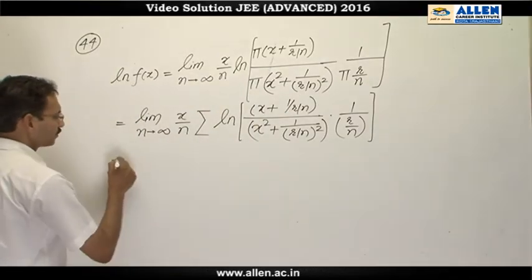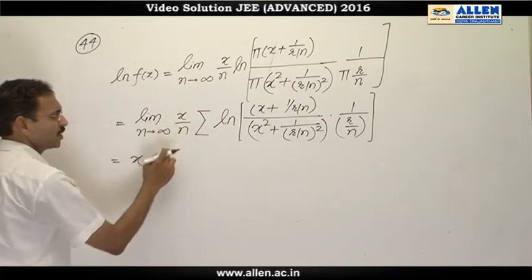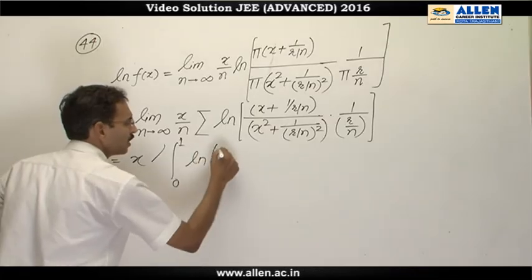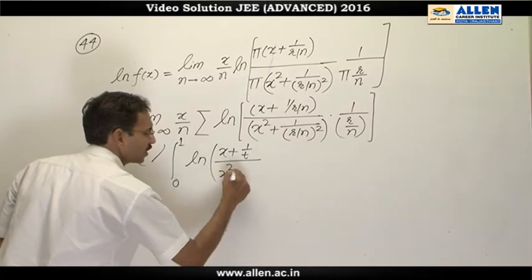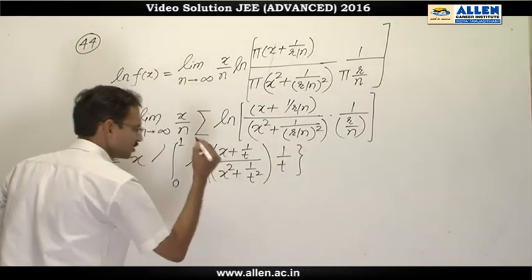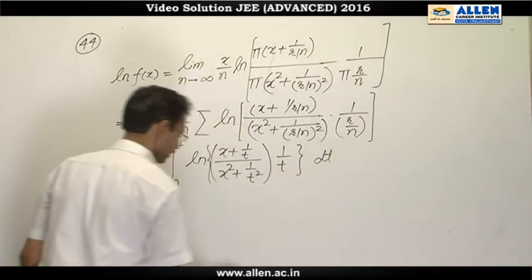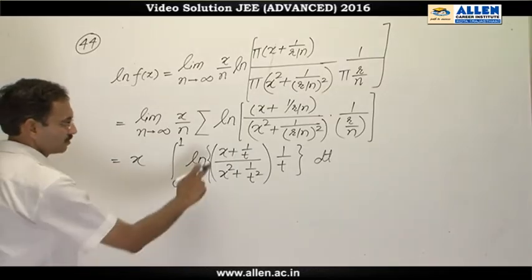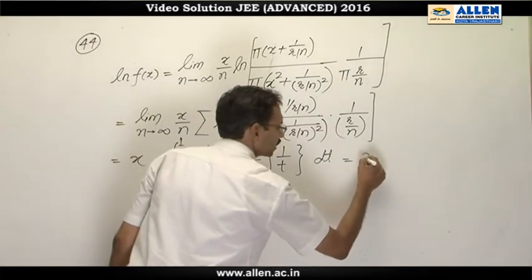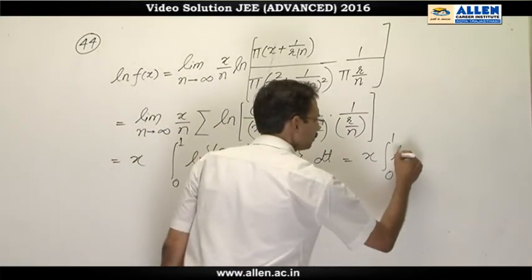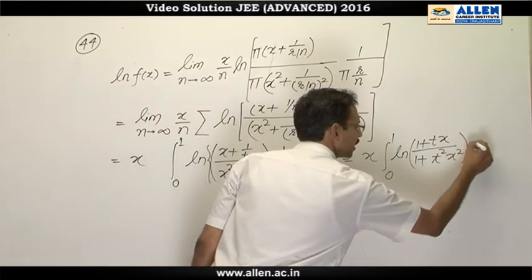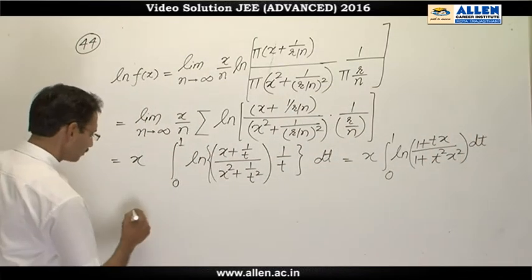Now we are going to convert it into an integration. X is independent of n. So I am writing it first. Then it is integration from 0 to 1 ln x plus 1 upon t divided by x square plus 1 upon t square multiplied by 1 by t. This is a curly bracket not fractional part dt. Now I will take LCM. This is tx plus 1, t square x square plus 1 and 1 over t will be cancelled. So it will become x times 0 to 1 ln 1 plus tx divided by 1 plus t square x square dt.